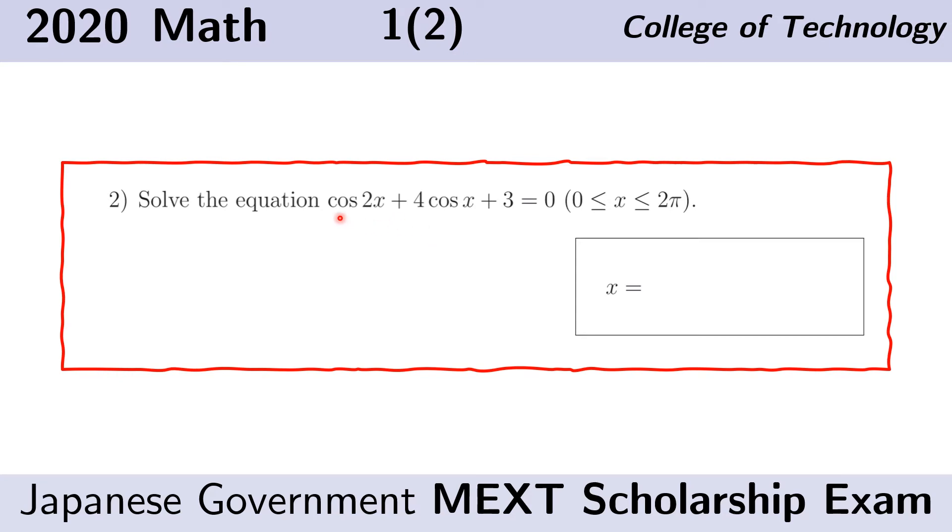We are trying to solve this trigonometric equation. Here we have the cosine of 2x, the cosine of x, and we are told that x is between 0 and 2π. That means we do not have infinitely many values of x because we are confined to this interval. So it's only between 0 and one revolution, which is 2π.